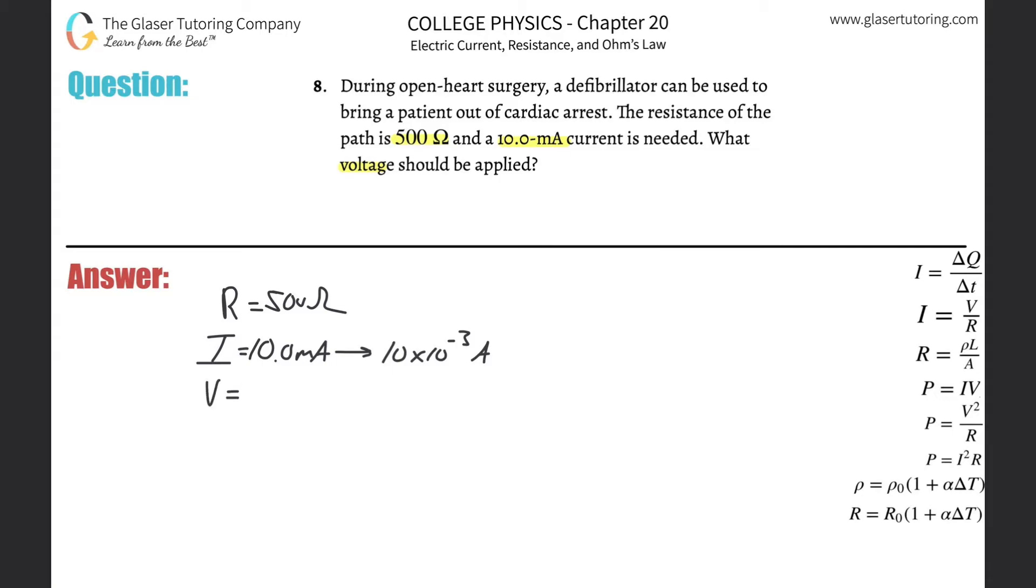And we need to now know the voltage. So what's a formula that relates these three variables? The famous Ohm's law. So we have that the current will be equal to the voltage divided by the resistance.